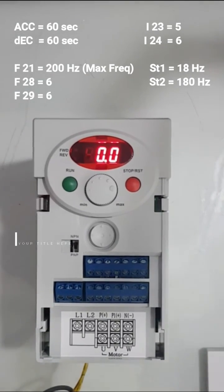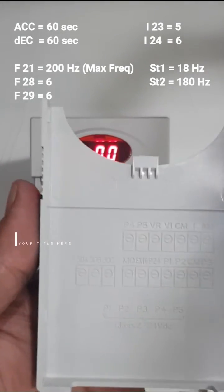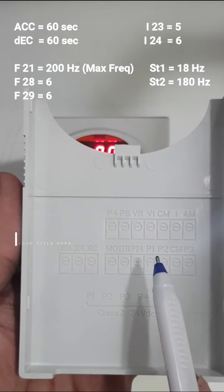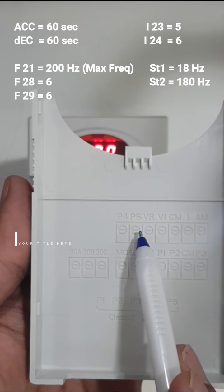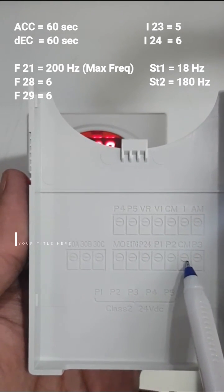So right now we have P1 forward, P2 reverse, P4 is a slow speed, P5 is the high speed, and CM is the common.